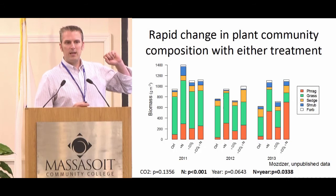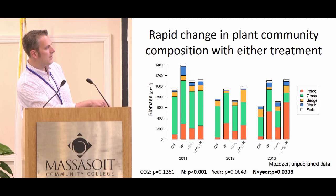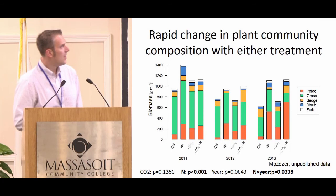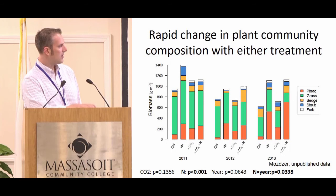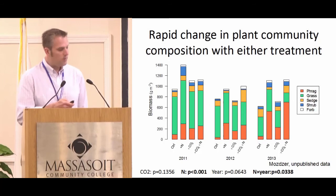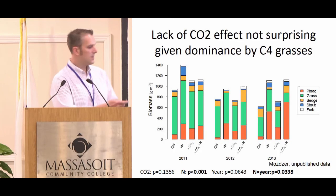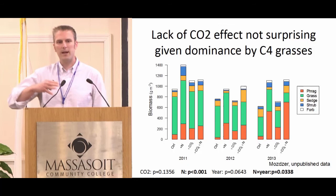Looking at peak ecosystem biomass in grams per meter squared over time from 2011 to 2013 — with red for Phragmites, green for grasses, and orange for sedges — we see a rapid change in plant community composition under either treatment. When we add CO2, Phragmites starts to invade very quickly; adding nitrogen shows a similar effect. At the ecosystem level we're not seeing a CO2 effect yet, which isn't surprising because these systems started out primarily as C4 grasses that don't respond to CO2.